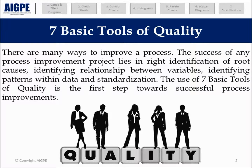There are many ways to improve a process. The success of any process improvement project lies in right identification of root causes, identifying relationships between variables, identifying patterns within data, and standardization. The use of the seven basic tools of quality is the first step towards successful process improvements.